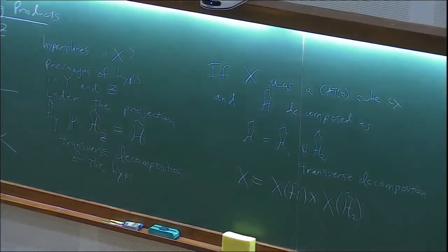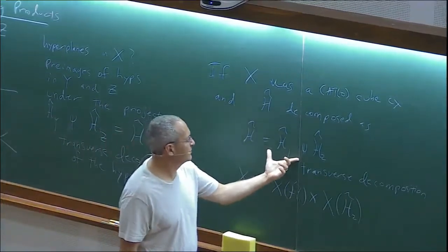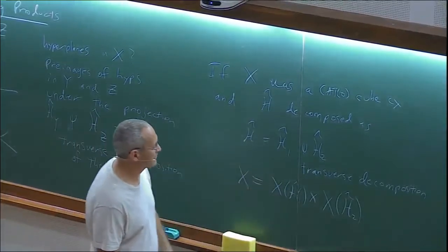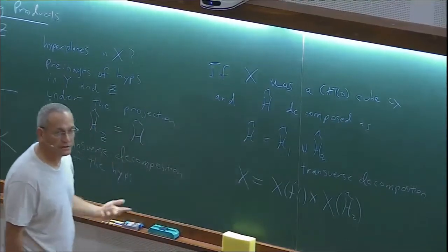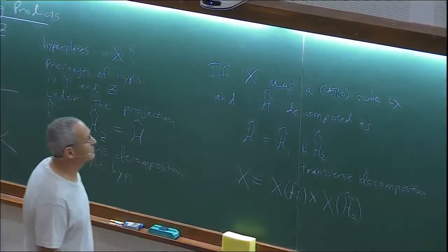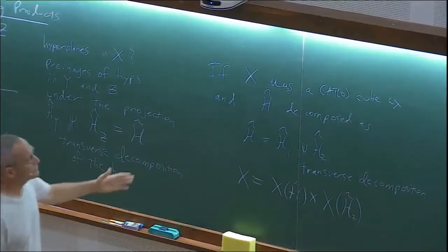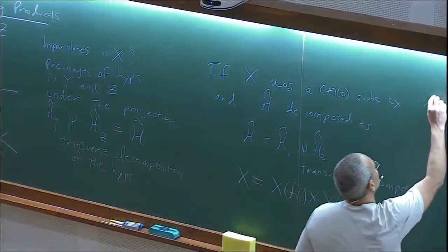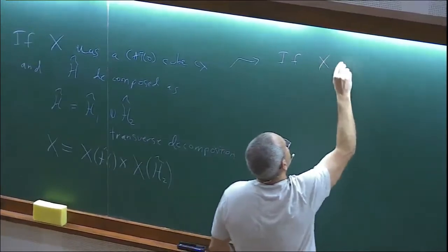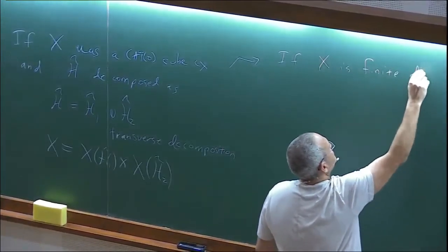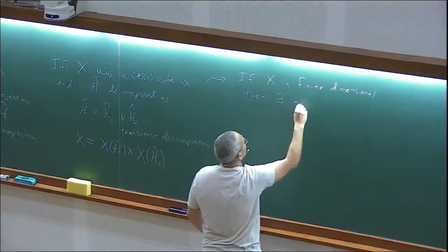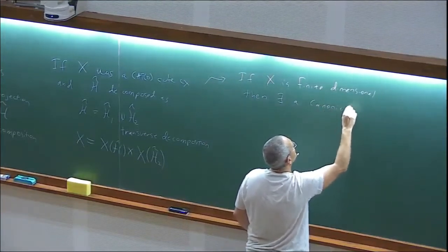This was in Roller's work — a very long document that I don't think was ever published — where he looked very formally at a lot of things having to do with CAT(0) cube complexes. This is just a little piece of it that I've found useful. If you think about this a little more, you'll see that if X is finite dimensional, then there exists a canonical product decomposition.